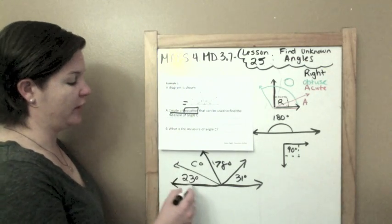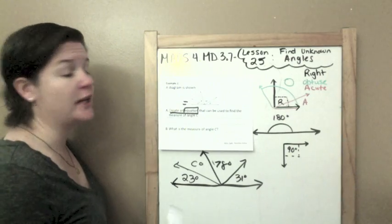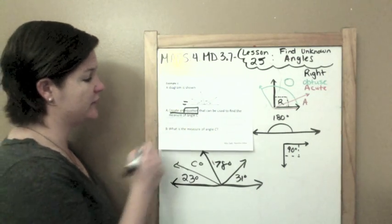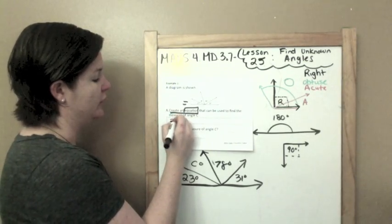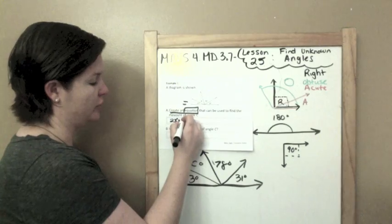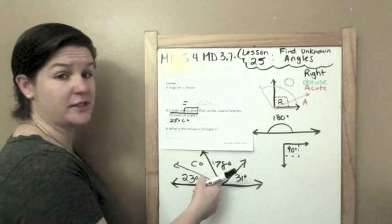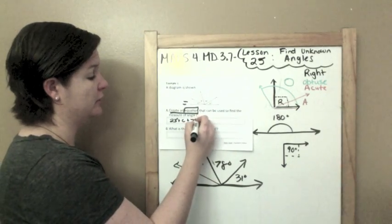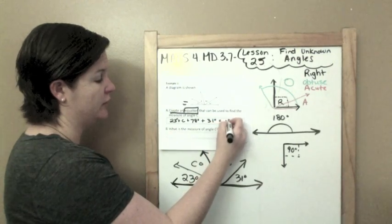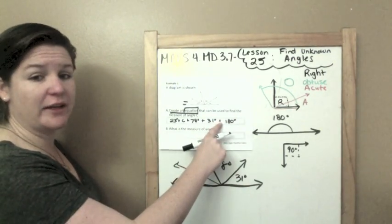Okay, so this is a straight line down here, and we know that straight lines measure 180 degrees. That means that when I add all these angles together, the sum of those angles should be, I'm sorry, 180 degrees. So because of that, I can write down this following equation. 23 plus, let me do degrees, plus C, plus 78 degrees, plus 31 degrees, equals my straight line, 180 degrees. That's all you need. Do I have my equation? Oh yeah!